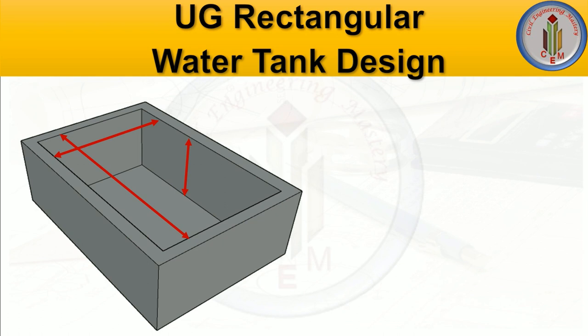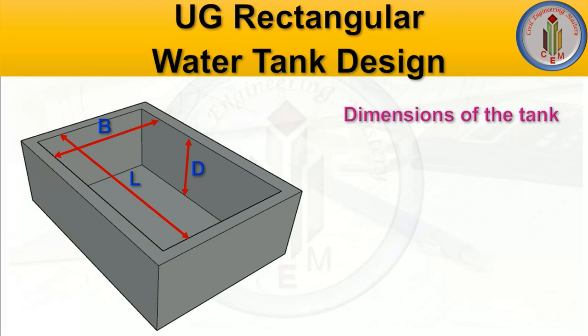The first and foremost thing in water tank design is the dimensions of the tank — that is, length, breadth, and depth. We need to find out the dimensions according to the capacity. For example, you may have to design a water tank of 10,000 liters, 15,000 liters, or even 50,000 liters. Whatever may be the capacity, first you have to identify the dimensions of the tank, then proceed with the design.